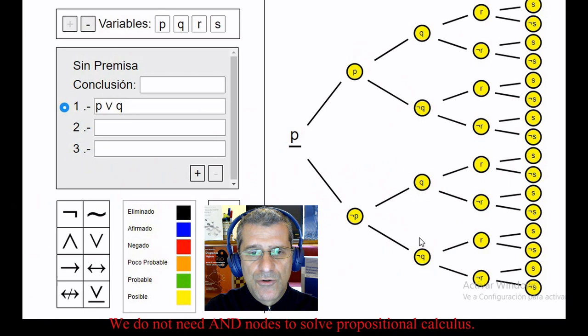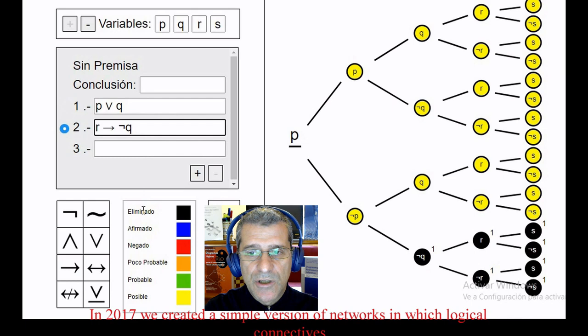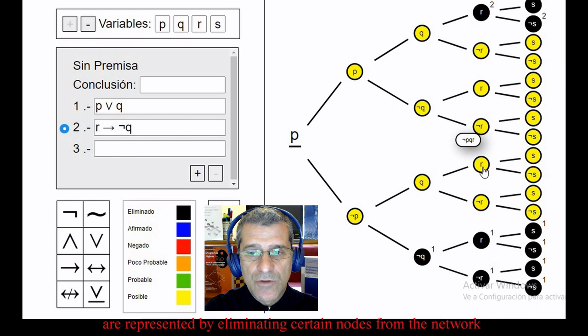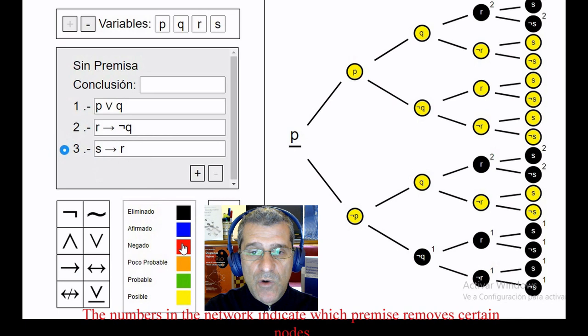In 2017, we created a simple version of networks in which logical connectives are represented by eliminating certain nodes from the network. The numbers in the network indicate which premise removes certain nodes. We reach conclusions by following the rules of inference of the expectation networks.